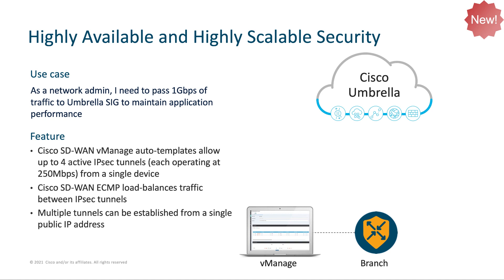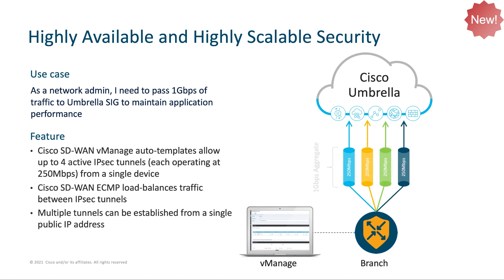Particularly if your organization desires to adopt Umbrella SIG as a primary method for securing branch traffic to the internet, you may find yourself questioning the availability and scalability of Umbrella SIG. This is where Cisco SD-WAN has you covered. As of version 20.4, Cisco SD-WAN can now automatically light up multiple redundant active-active tunnels to the Umbrella SIG service, with each tunnel homing to a different data center. By using flow-based ECMP, or equal-cost multipath load balancing, Cisco SD-WAN can also balance outbound traffic across each of these tunnels to allow your branch to scale up to 1 gigabits per second.